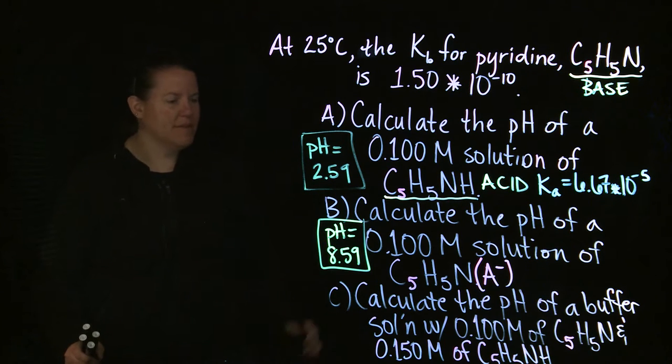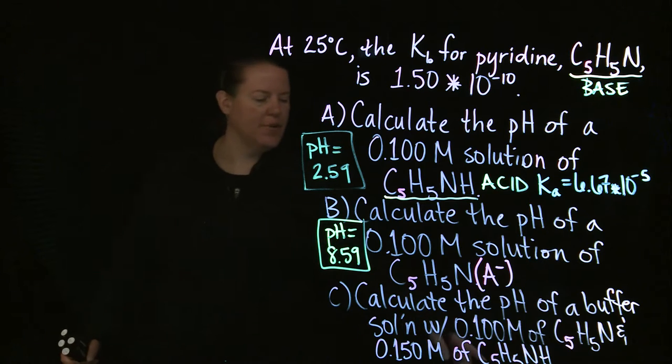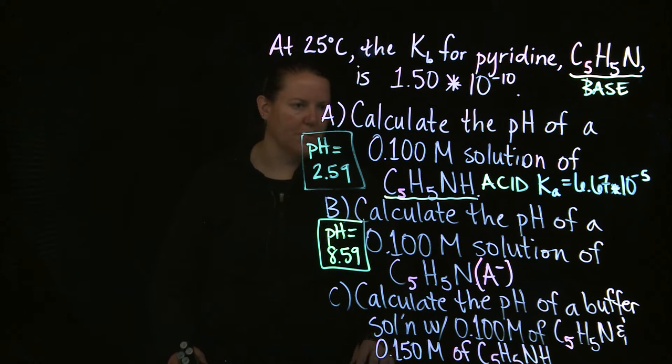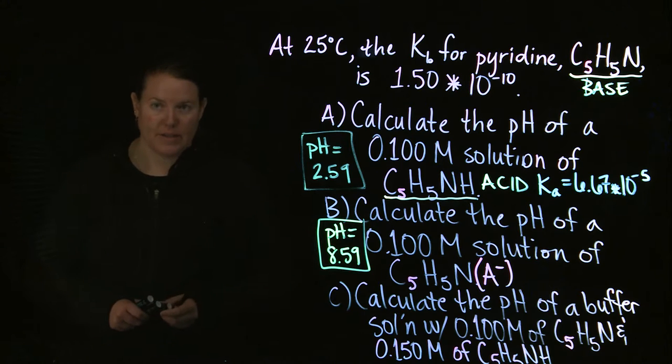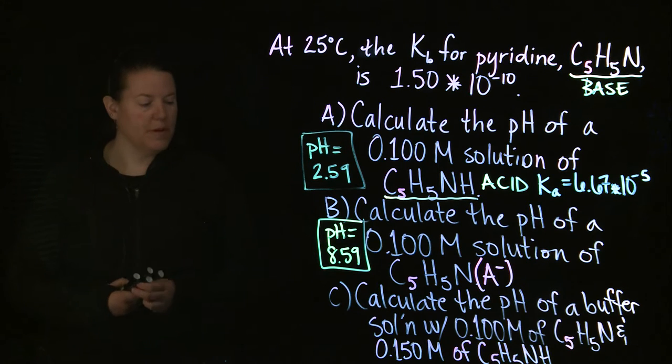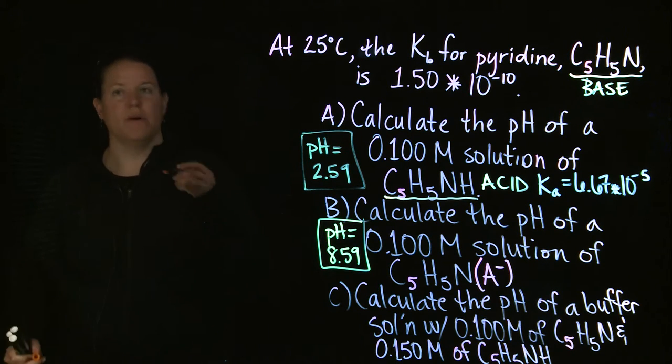Alright, so what do we have here? You guys can't quite see the very bottom of this, but I'll tell you what we've got. Calculate the pH of a buffer solution with 0.1 molar of pyridine and 0.15 molar of the acid. So what kind of information are we given? We want the pH.